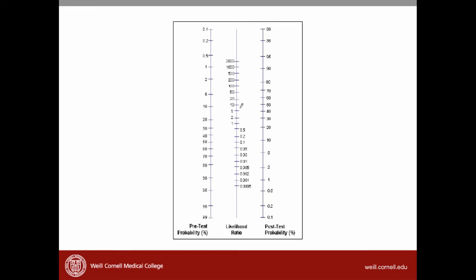If we use our example, we can see that the likelihood ratio for the multi-detector CT was 9.4, where I've drawn the dot. Now let's say that the pretest probability for a patient — that is how likely we think the patient has the disease — is about 70%. That seems reasonable for our patient because he had chest pain and a positive stress test. If we draw a line between the pretest probability through the likelihood ratio, we can generate a post-test probability of about 95%. We can also change the pretest probability and see how that changes the post-test probability.